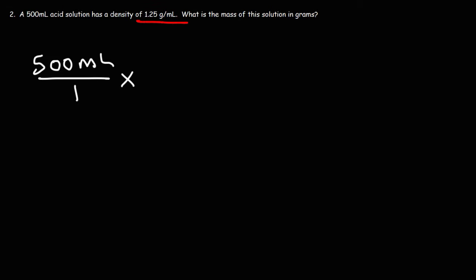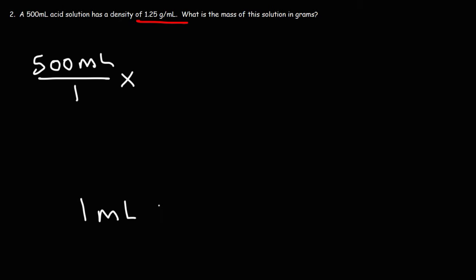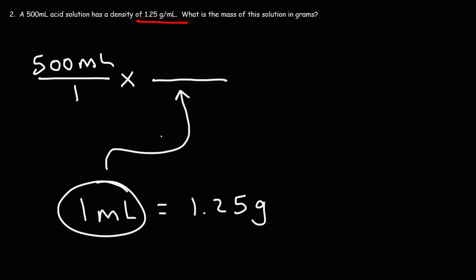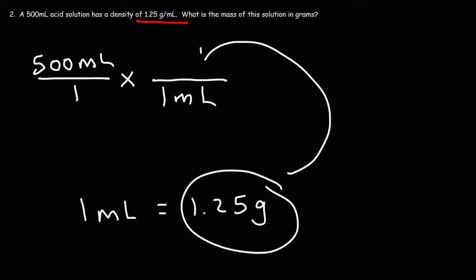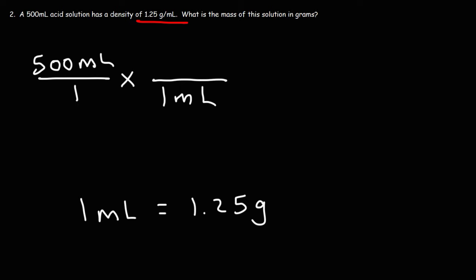So this tells us the conversion factor. A density of 1.25 grams per milliliter means that one milliliter of this particular acid solution has a mass of 1.25 grams. So now this time, in the second fraction, we're going to put this part of the conversion factor on the bottom. The other part we are going to put on top of the second fraction.